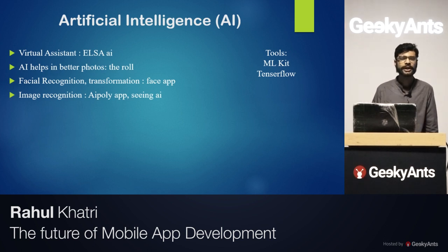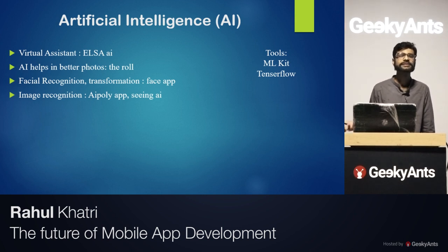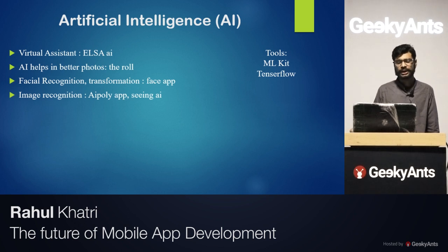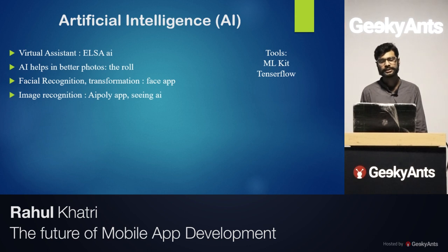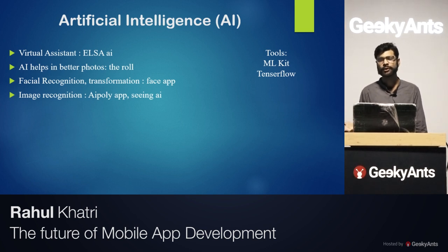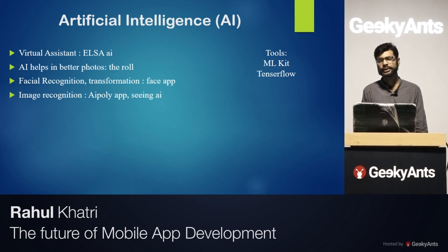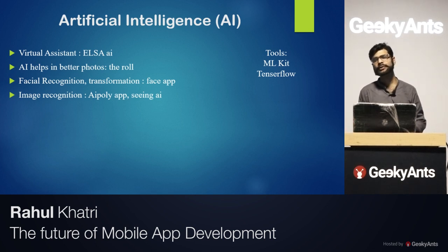With image recognition tools, apps like AI Poly or Seeing AI help visually impaired or blind people. These apps use machine learning algorithms — you point your camera at an object, scan it, and the app tells you what object it is, whether it's a phone, a table, a pen, or anything else. This helps blind people identify objects around them.